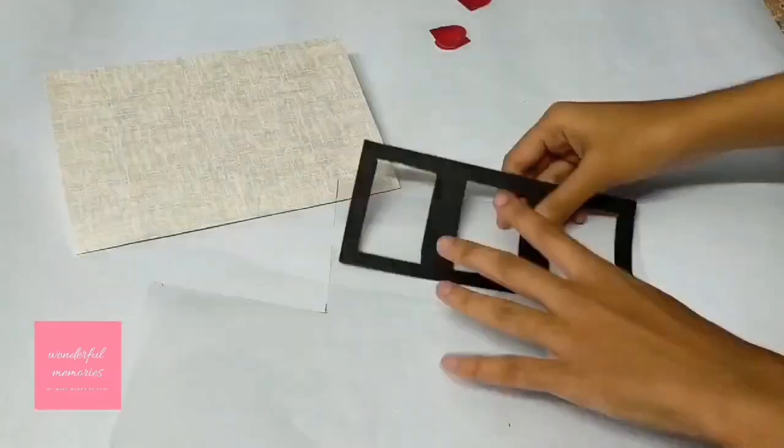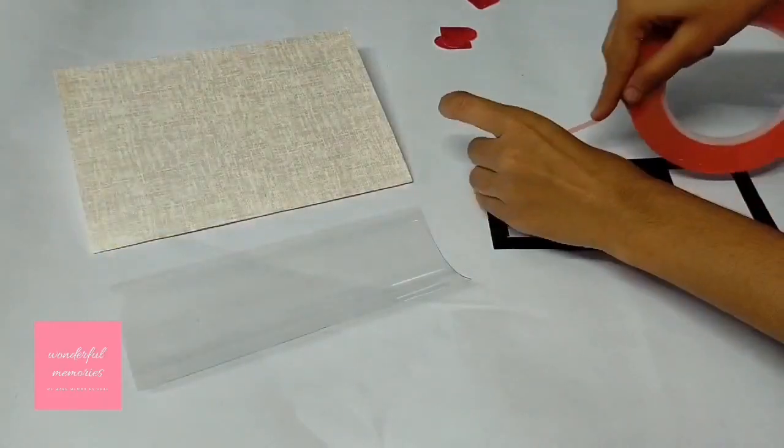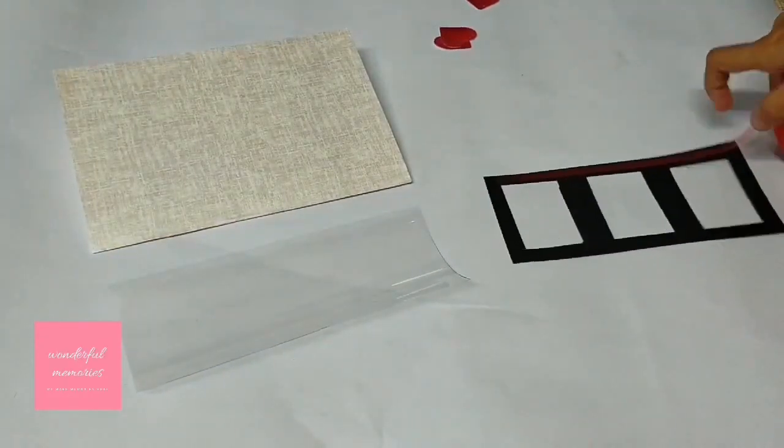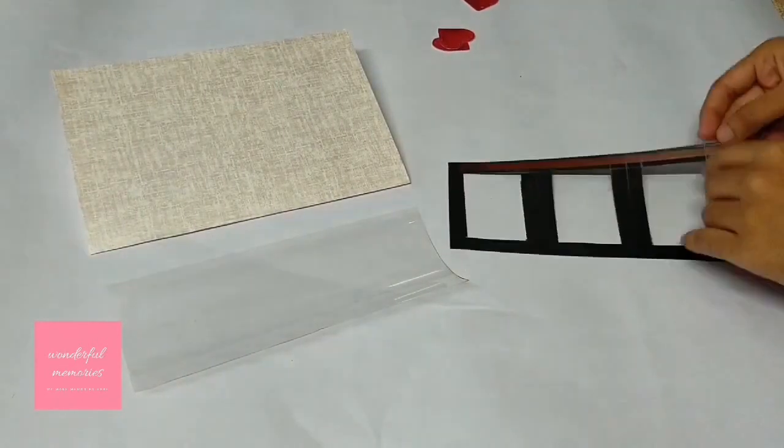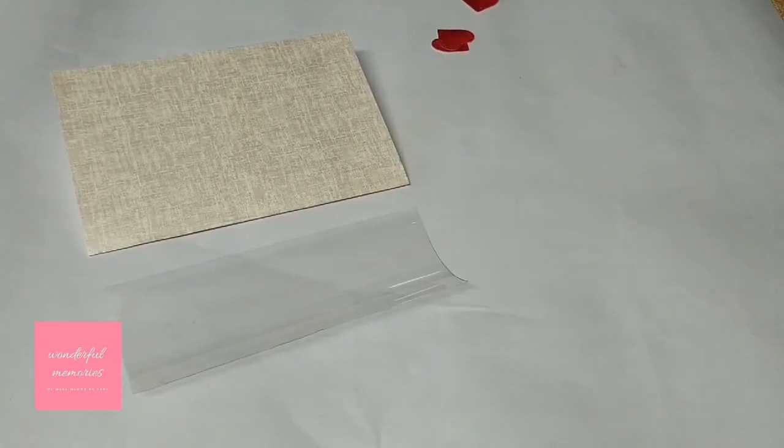Take three hearts and take an OHP sheet and cut it like the shape of the strip. Use sticky tape or double-sided tape to stick the OHP sheet, as the OHP sheet cannot stick with glue.